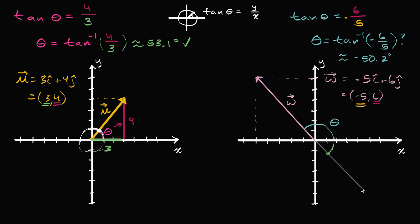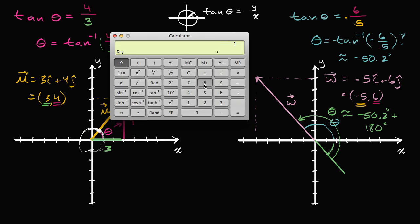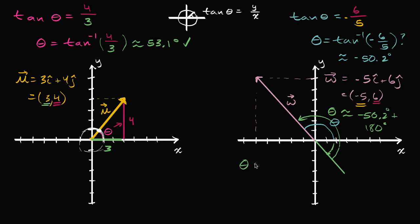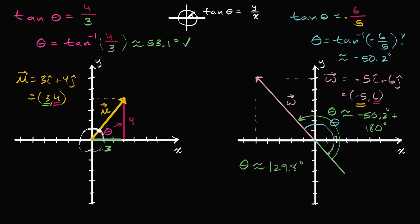To get the correct angle, we add 180 degrees. So theta is approximately negative 50.2 degrees plus 180 degrees, which equals approximately 129.8 degrees. That looks much better — the angle clearly goes past 90 degrees, which matches the vector in the second quadrant.